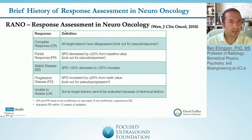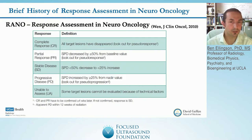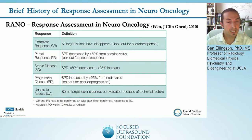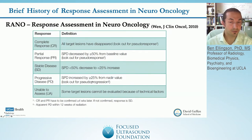The RANO criteria defines a number of response categories. Complete response is where all target lesions, all contrast-enhancing measurable lesions, have disappeared. Partial response is where the sum of the product diameter has decreased more than 50% from baseline. Progressive disease is when the sum of the product diameters has increased more than 25% from the lowest or nadir value. And stable disease is everywhere in between.